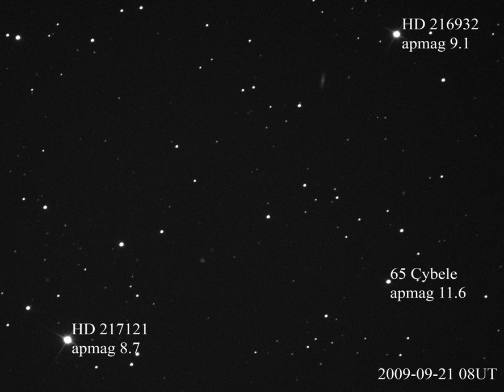The scale used to indicate magnitude originates in the Hellenistic practice of dividing stars visible to the naked eye into six magnitudes. The brightest stars in the night sky were said to be of first magnitude (M=1), whereas the faintest were of sixth magnitude (M=6), which is the limit of human visual perception without the aid of a telescope. Each grade of magnitude was considered twice the brightness of the following grade — a logarithmic scale — although that ratio was subjective as no photodetectors existed. This crude scale was popularized by Ptolemy in his Almagest and is generally believed to have originated with Hipparchus.